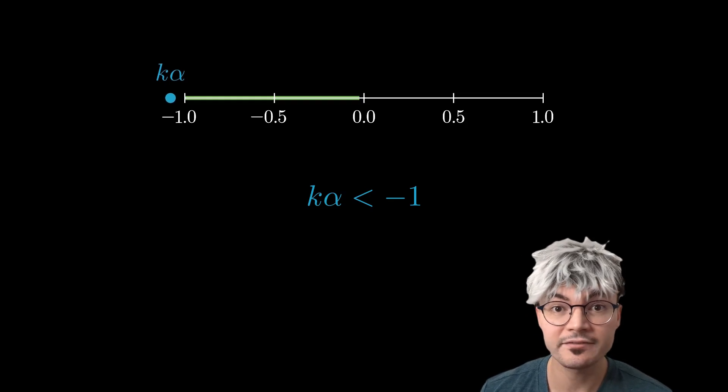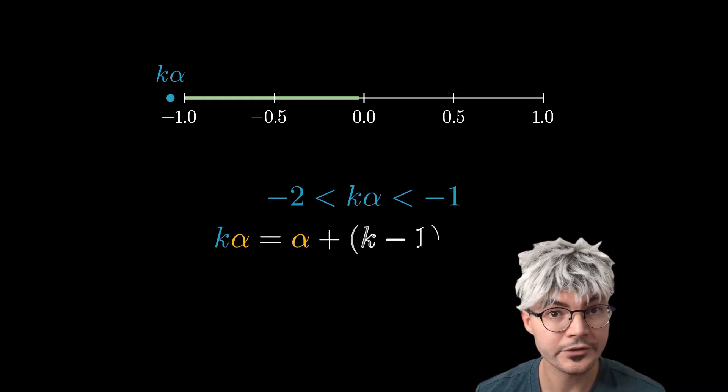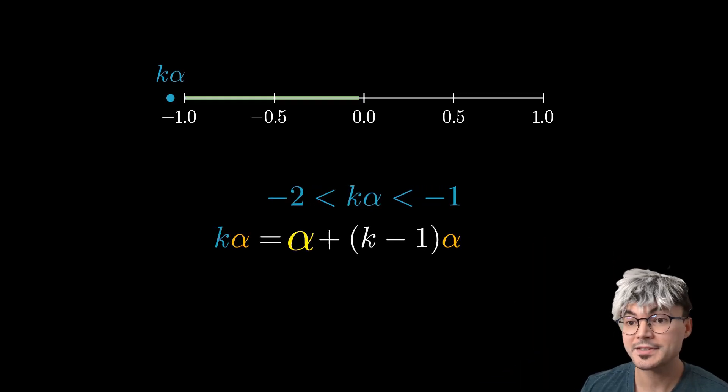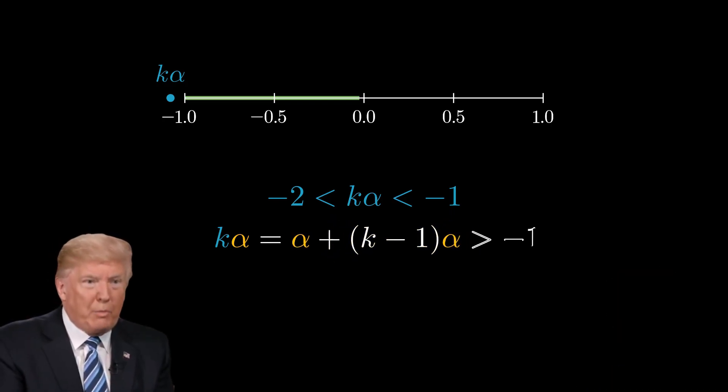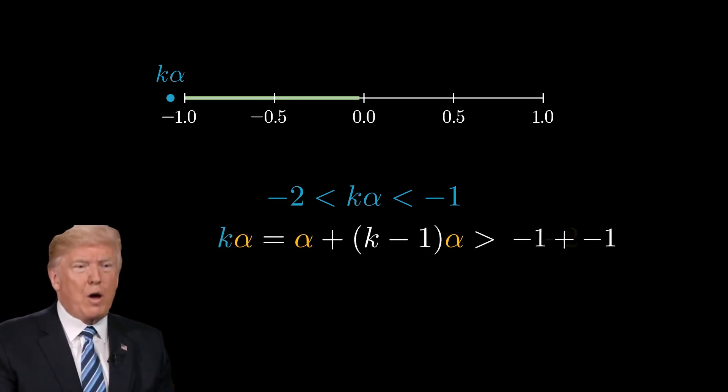Actually, k times alpha is also larger than minus 2, and here is the proof. k times alpha is equal to alpha plus k minus 1 times alpha. Alpha is larger than minus 1, and by minimality of k, k minus 1 times alpha is also larger than minus 1.